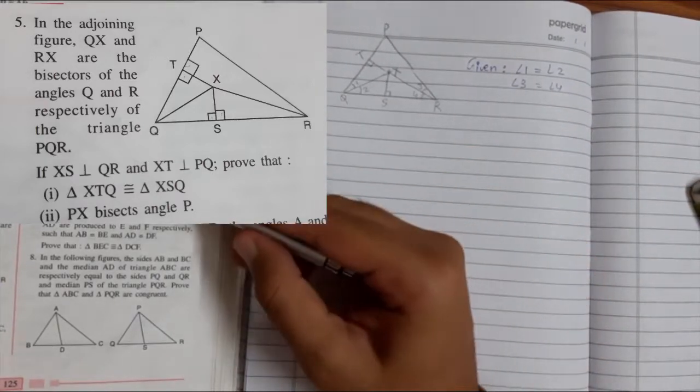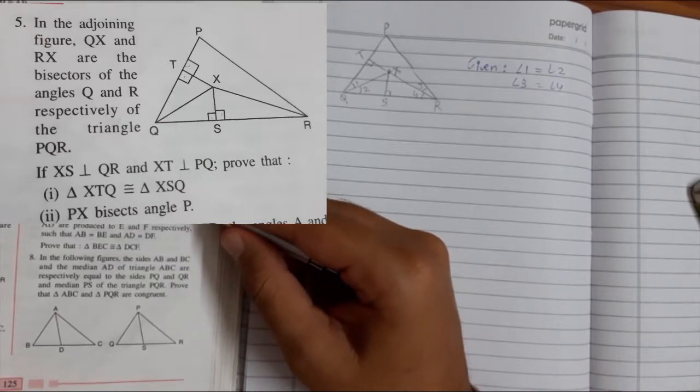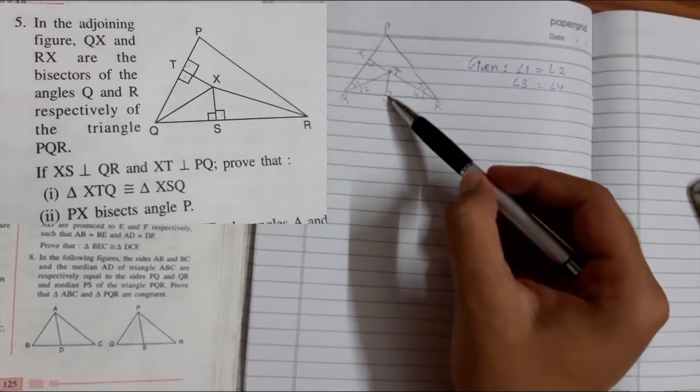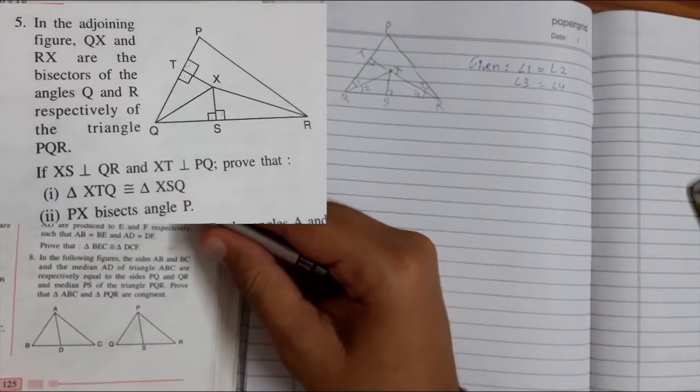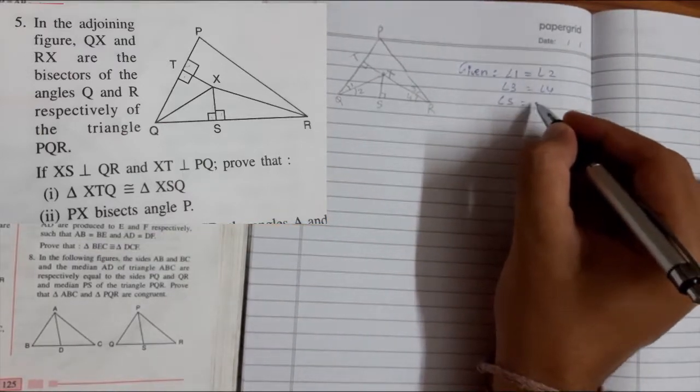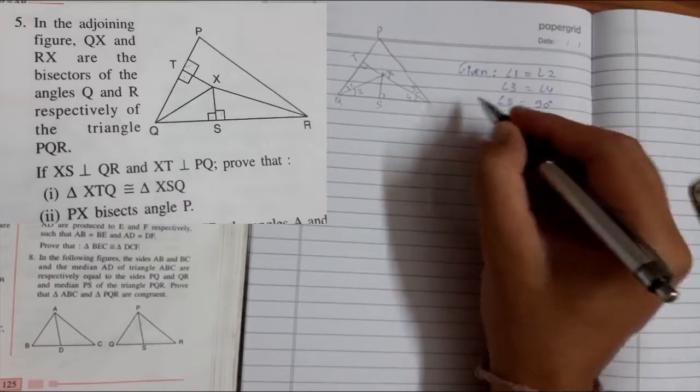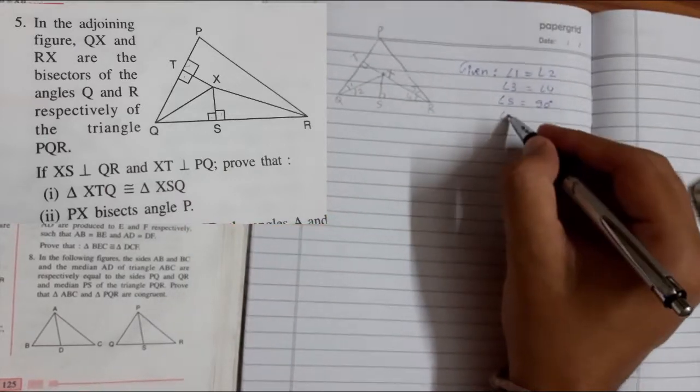They are saying XS is perpendicular to QR. Perpendicular means the angle is 90 degrees. XS is perpendicular, that means angle S is 90 degrees. And XT is perpendicular, so T is also 90 degrees.